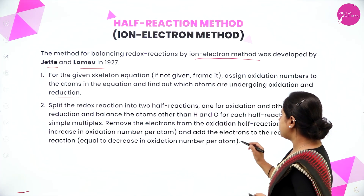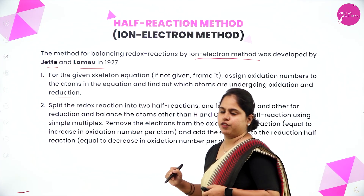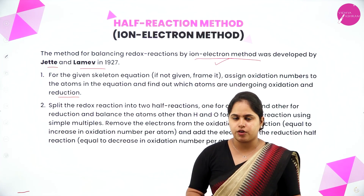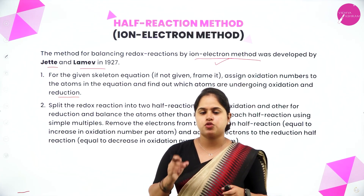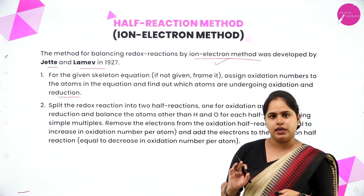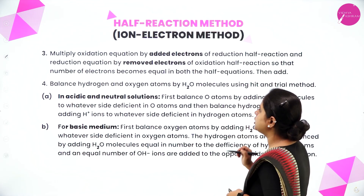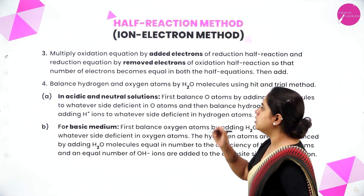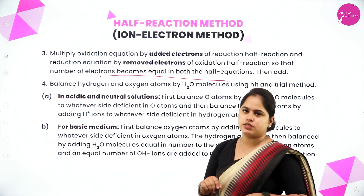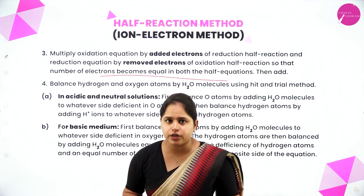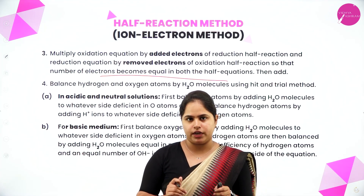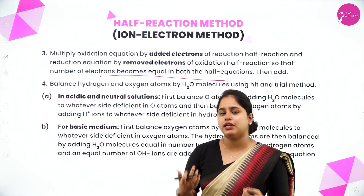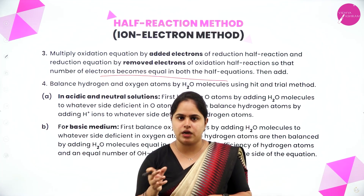Now remove the electrons from the oxidation half reaction and add the electrons to the reduction half reaction. As the name suggests, it is the ion electron method — in oxidation there is loss of electrons, and in reduction there is gain of electrons. Then multiply the oxidation equation by the electrons added in the reduction half reaction and the reduction equation by the electrons removed in the oxidation half reaction, so that the number of electrons becomes equal in both half reactions.